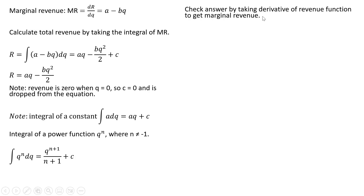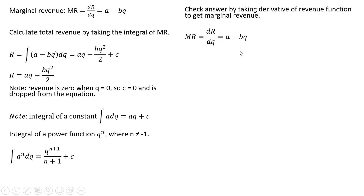We can check our answer by taking the derivative of the revenue function to make sure we get back marginal revenue. So if we take the derivative of the revenue function, the derivative of a times q is just a, and the derivative of minus bq squared divided by 2 should just be minus bq. So it looks like we did our integral right.